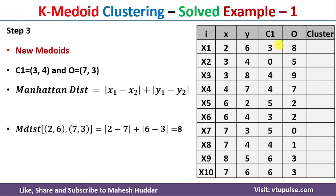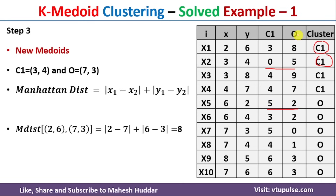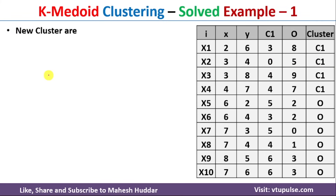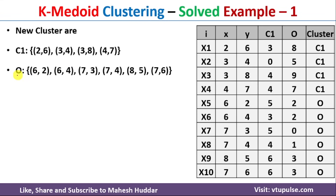Once the new distances are calculated, we reassign each data point to the nearest medoid. For (2,6), comparing distances 3 and 8, since 3 is smaller, it is assigned to C1. For (3,4), comparing 0 and 5, 0 is smaller, so it stays in C1. For another data point with distances 5 and 2, since 2 is smaller and corresponds to O, it is assigned to O. This reassignment is repeated for all data points, yielding updated clusters for C1 and O.